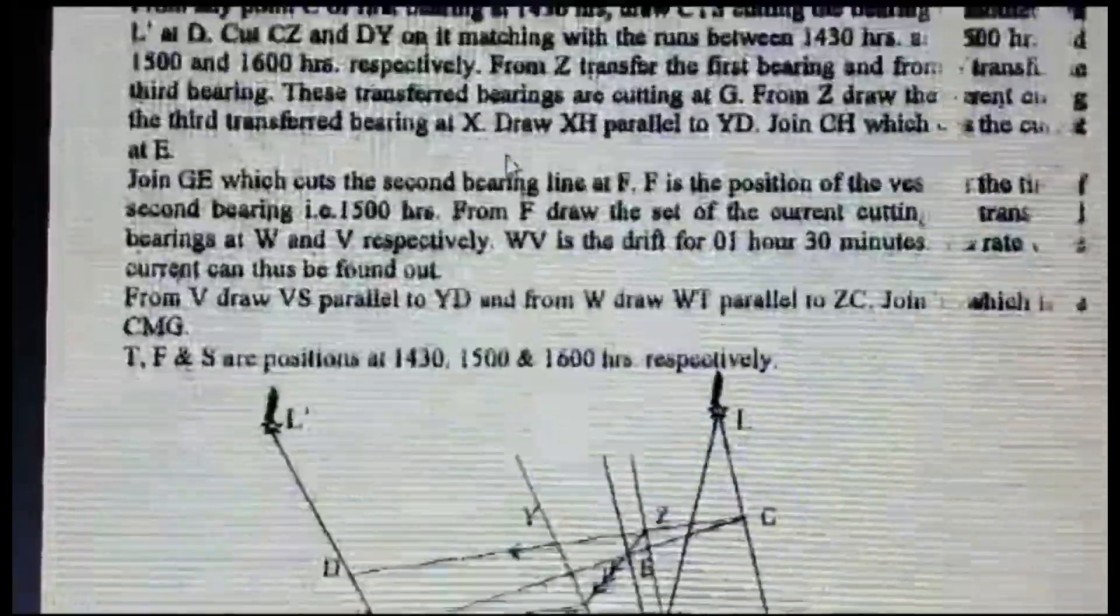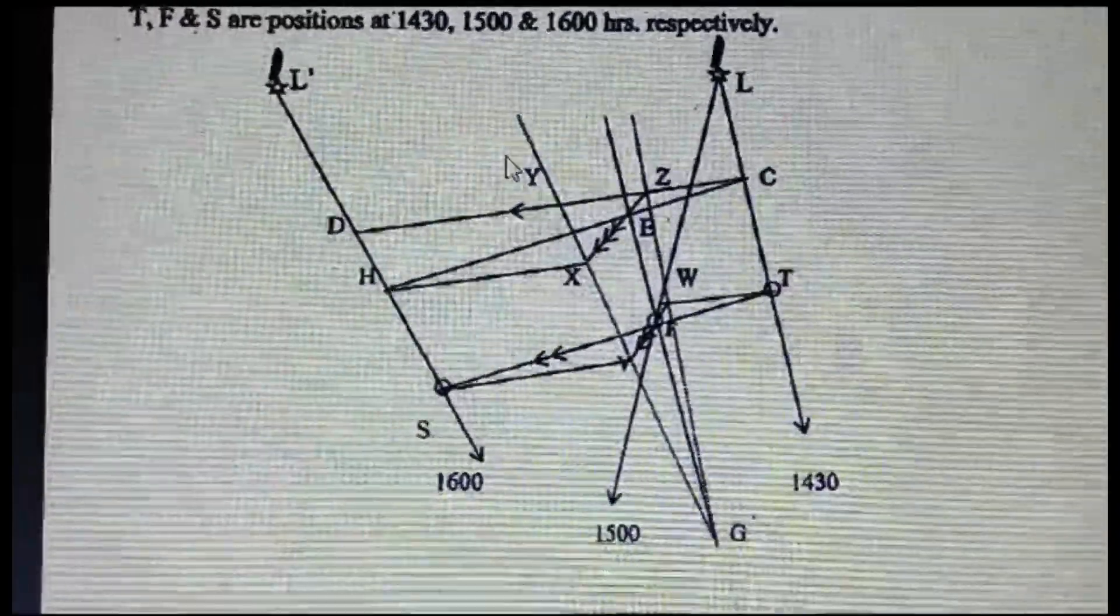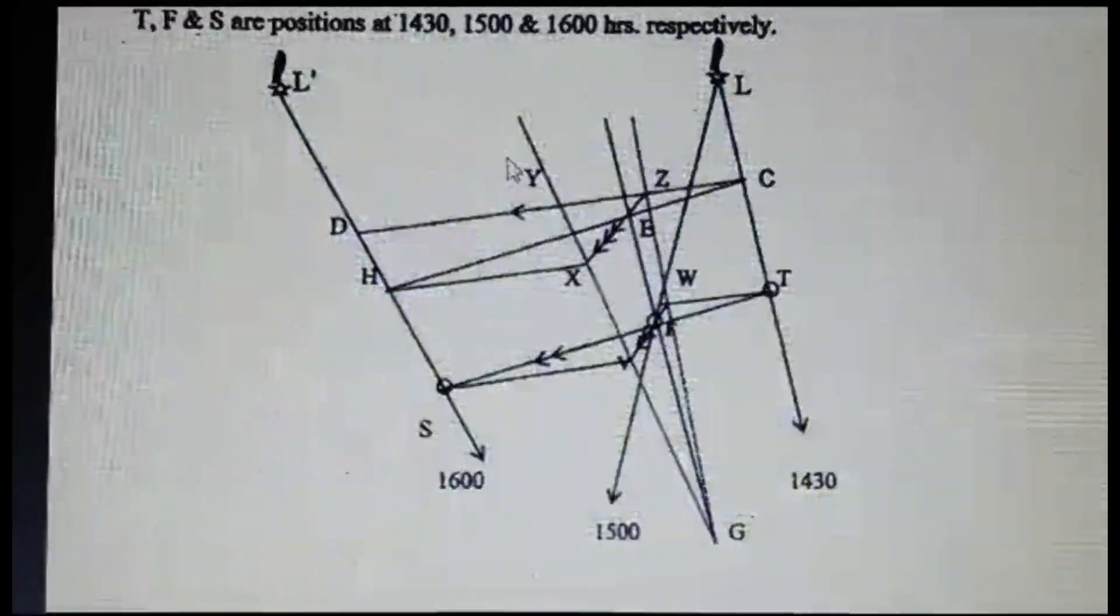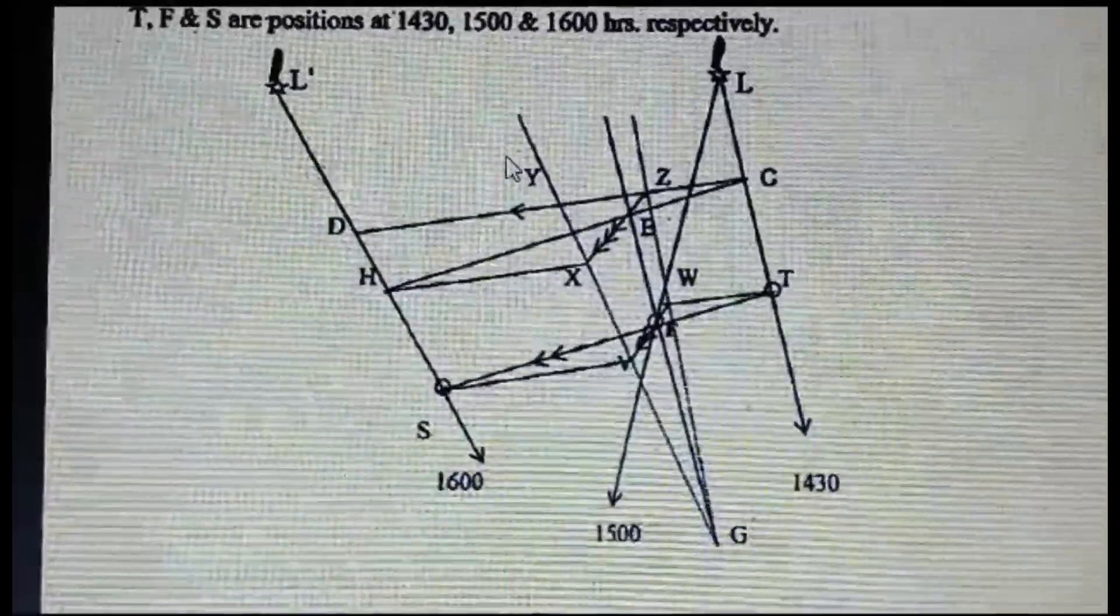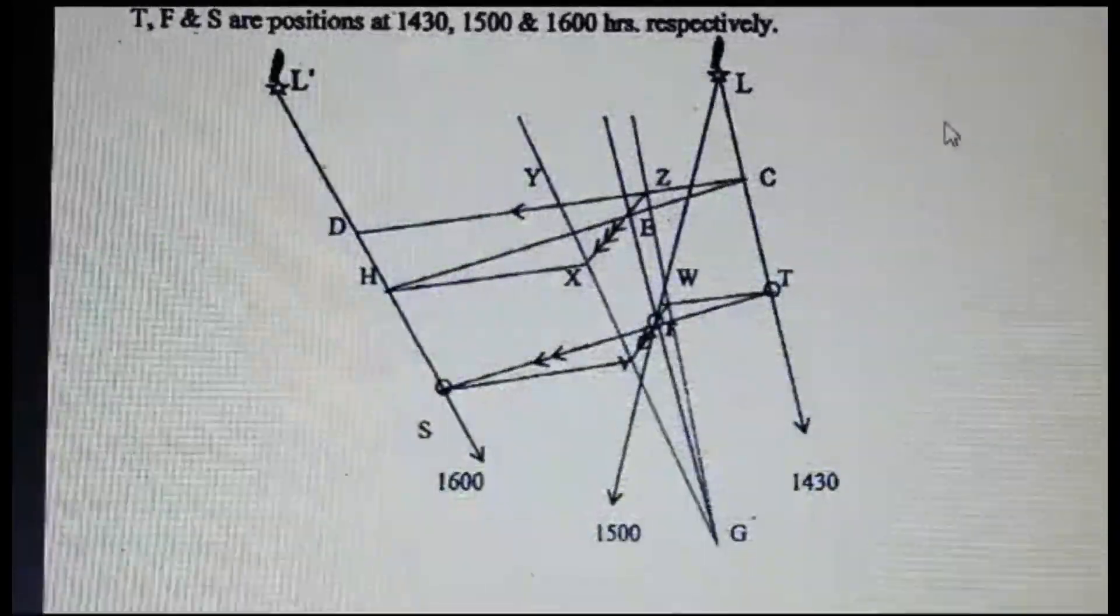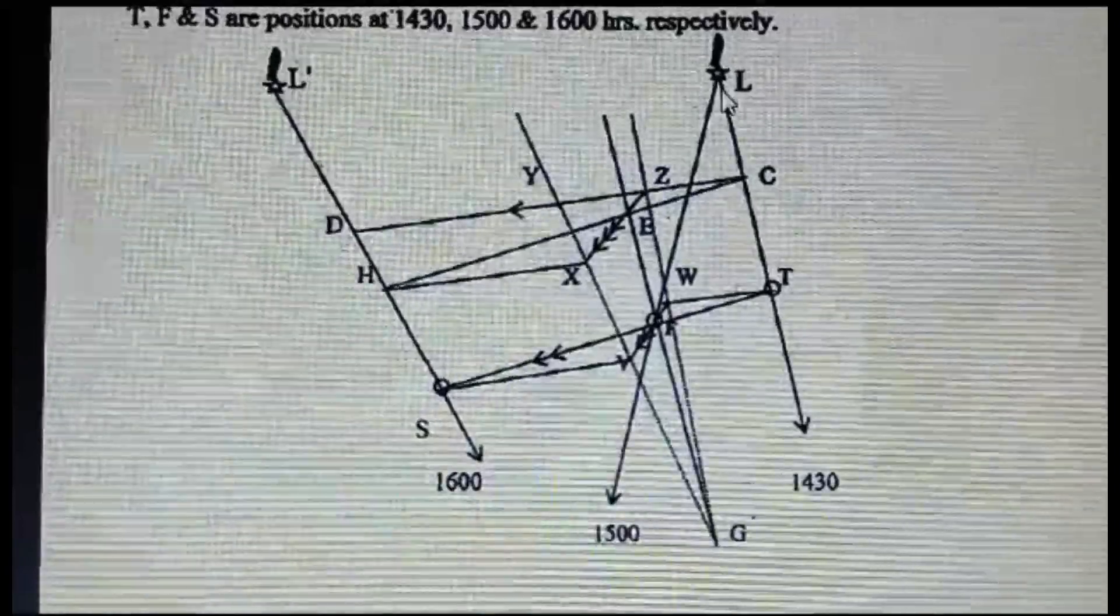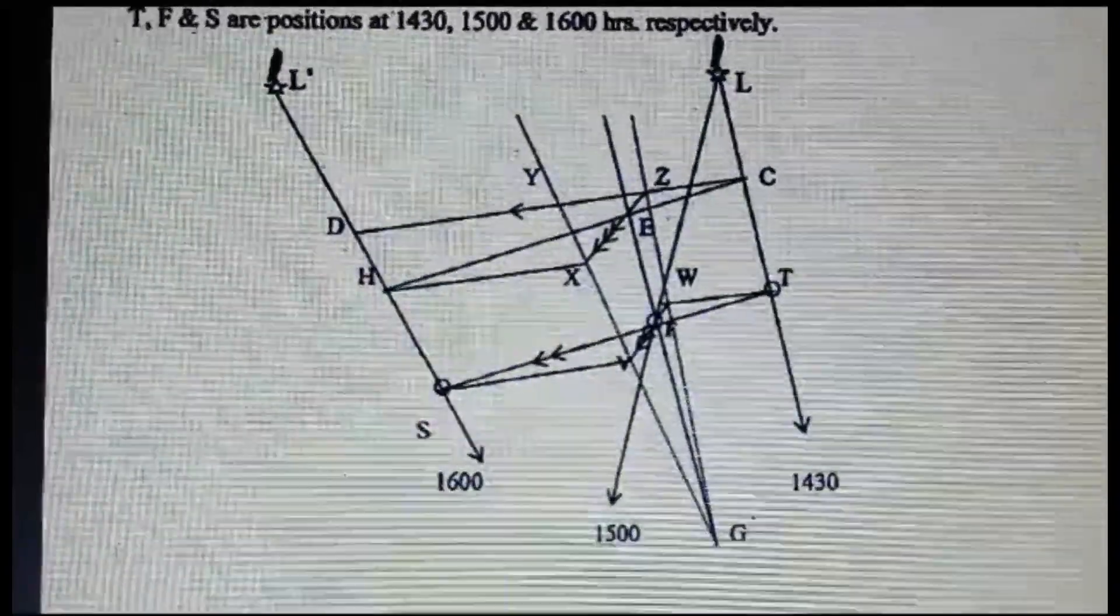Now we will directly approach. I will directly show you the concept first, we will see the concept and then we will solve one fast numerical. So now here you can see that two lighthouses are given, and from one lighthouse two bearings are given at 1400 and 1500.